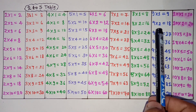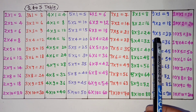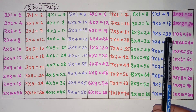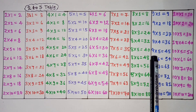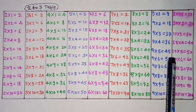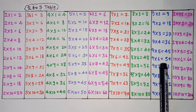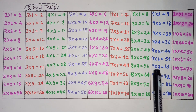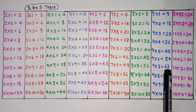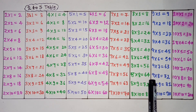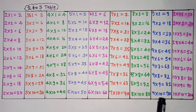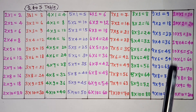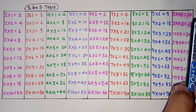9×1 is 9, 9×2 is 18, 9×3 is 27, 9×4 is 36, 9×5 is 45, 9×6 is 54, 9×7 is 63, 9×8 is 72, 9×9 is 81, 9×10 is 90.